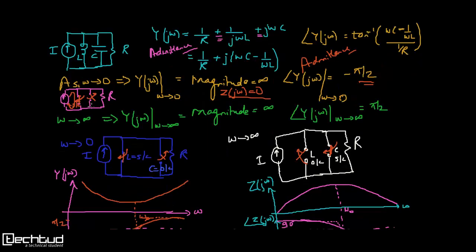Now when ω tends to infinity: the inductor will act like an open circuit and the capacitor will act like a short circuit. Because ωL is tending to infinity, and 1/ωC tends to 0 when ω tends to infinity. So again there is a short circuit path, but this time through the capacitor. The whole current will flow through the capacitor, which will keep on building the voltage from the current source.